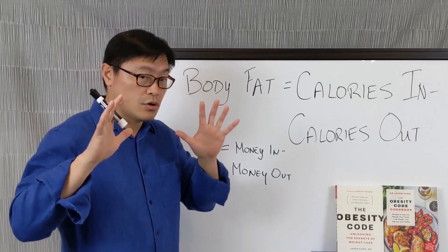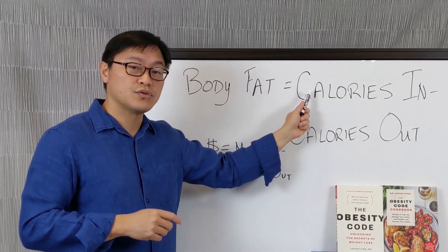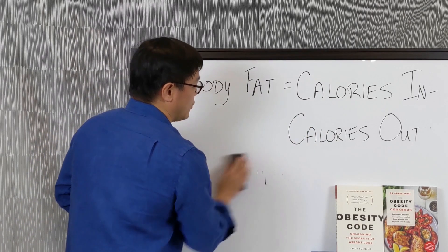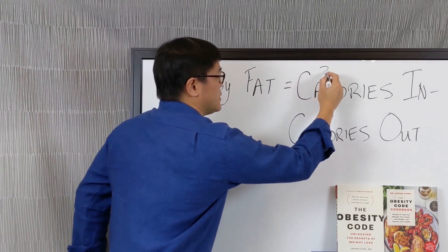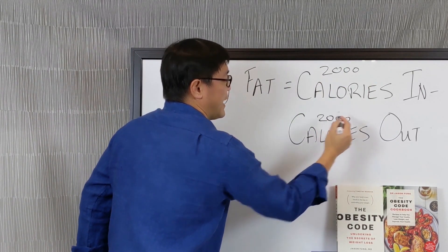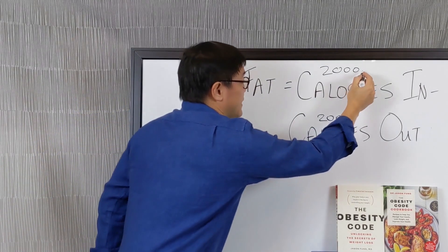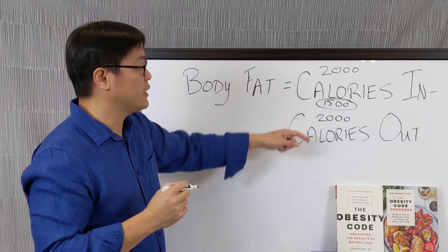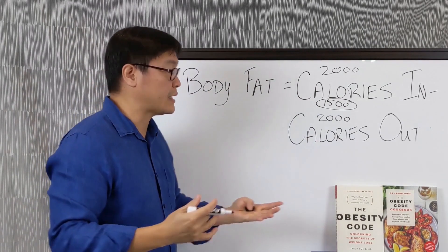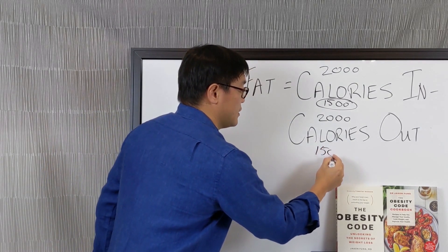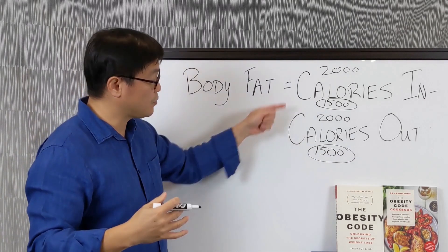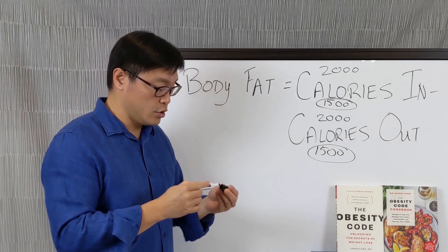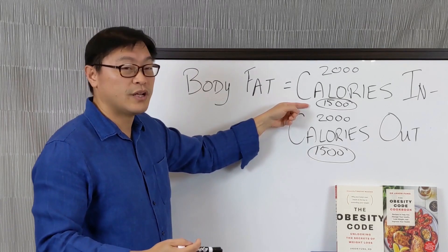Because what we've learned over the last 50 years is that when you try to reduce those calories in, the calories out reduces along with it. That is, if you started out with 2,000 calories in and 2,000 calories out, what you assume is that when you lower this to 1,500 calories in, that this will stay at 2,000, and therefore you're going to lose body fat. But what we've learned over the last many years is that what happens very quickly is that your body reduces its calories out to 1,500 as well, and therefore you no longer continue to lose weight even when you're eating less calories.